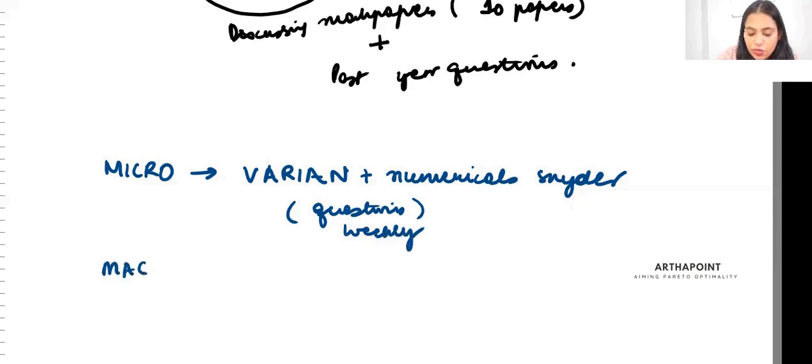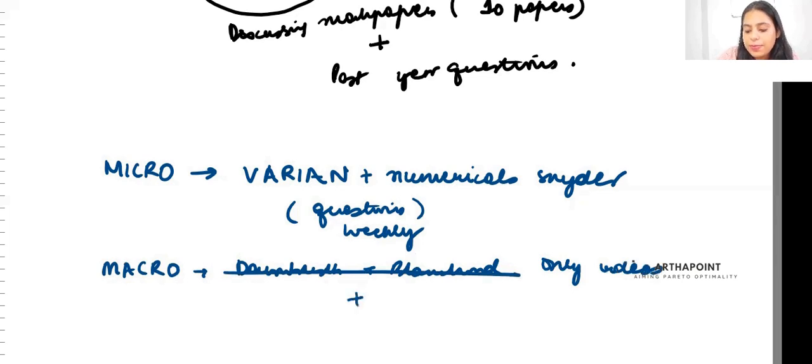For macro, Dornbusch and Blanchard are used in combination. So use these two books. If you are taking my classes, no book required, only videos followed by practice questions.